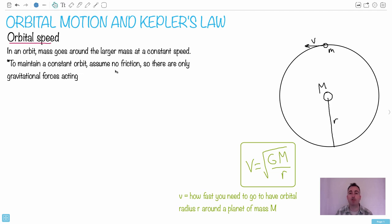To have a constant orbit, we're going to assume there's no friction from gases in space or whatever, so there's only going to be gravitational forces acting. Now what's really important about this: if we have a gravitational force, then we could say we have a gravitational force Fg, and remember the gravitational force equation is GMm over r squared.